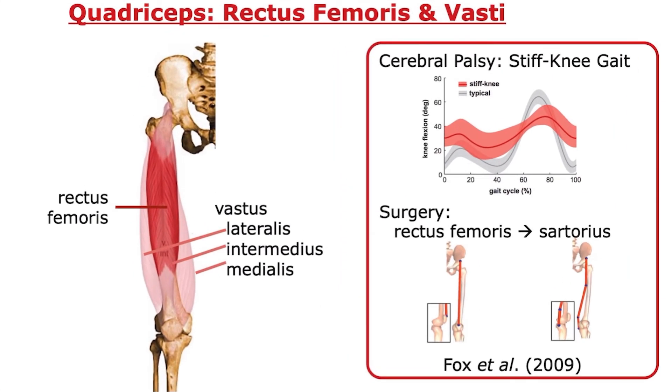What I'm plotting is knee flexion angle versus percent gait cycle. Here's normal knee flexion angle shown in gray. There's a little bit of knee flexion during stance, but then a lot of knee flexion during the swing phase.